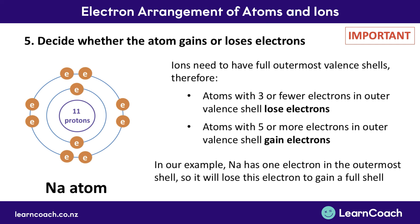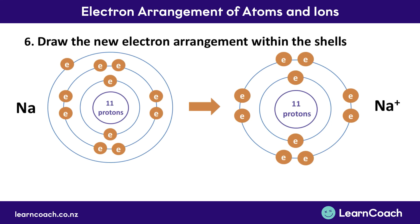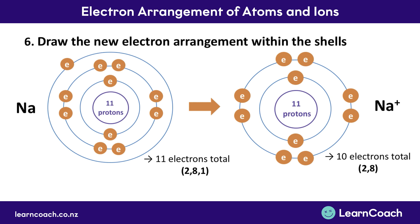In step 5 we've decided that our sodium atom is going to lose an electron, so we know it's going to form a positive ion. The last step involves drawing the new electron arrangement within the shells. Our sodium atom had an electron arrangement of 2, 8, 1, and because we're forming an ion with a full outer shell, we lose that one electron in the outer valence shell, so the electron arrangement of the sodium ion is 2, 8. Because we've lost an electron, we have only 10 electrons total. And because there are still 11 protons in the sodium ion, there is one more proton than electron, and our sodium ion has a positive 1 charge.